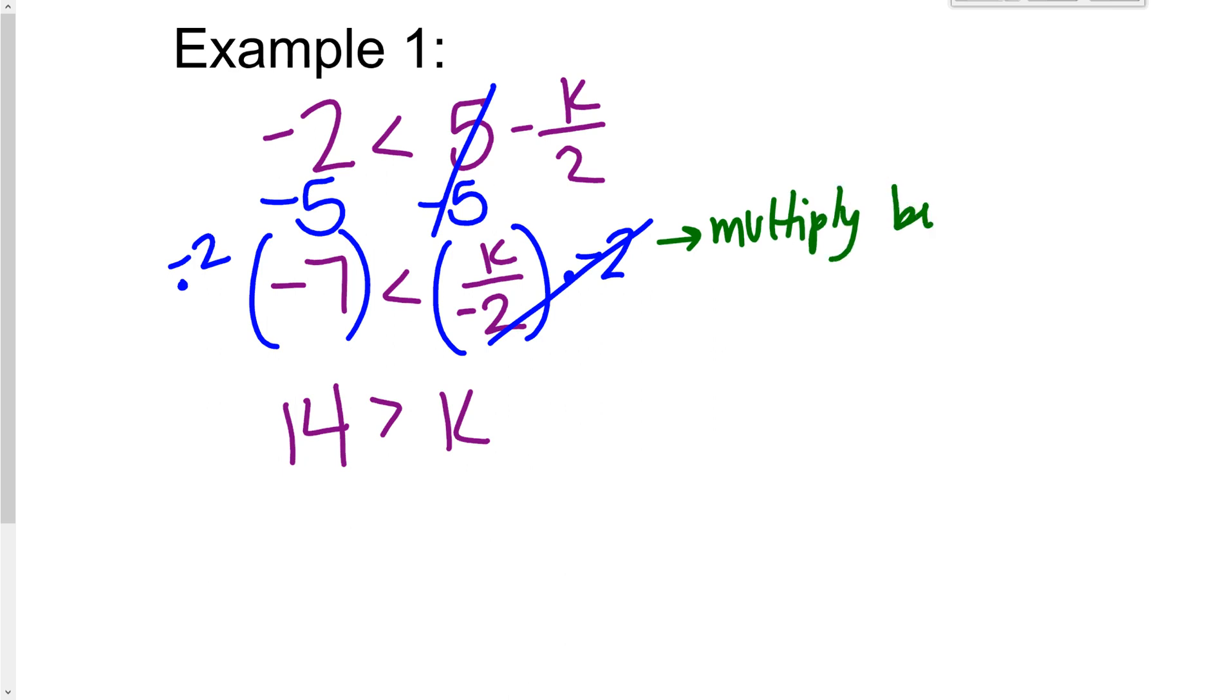So multiply by negative, flip the sign. Don't get a careless error because you are not flipping that sign. Multiply or divide by a negative, you flip the sign.